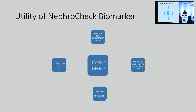The utility of TIMP2 and IGBP7 is not only in predicting the risk — it extends to preventing the occurrence of severe stages of AKI as well as monitoring AKI progression. A rise in NephroCheck during the disease course indicates progression, while a drop indicates improvement.